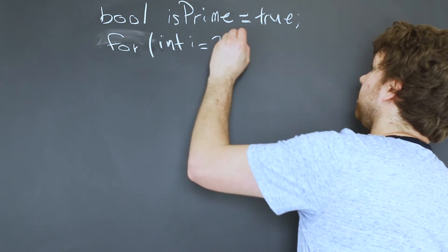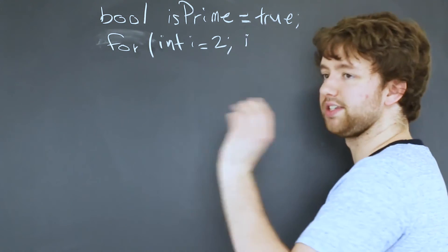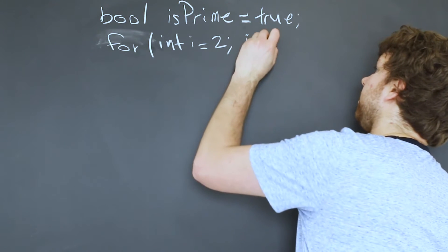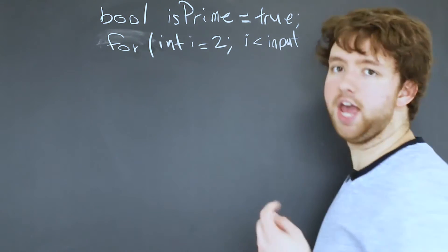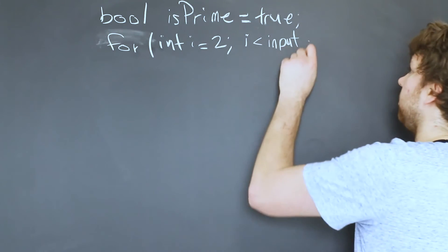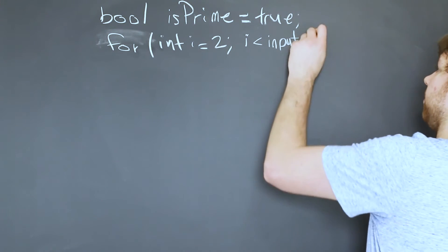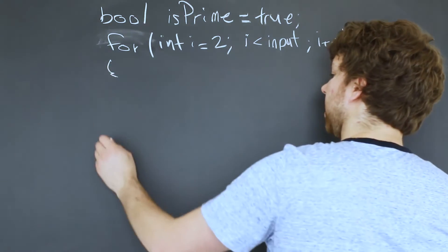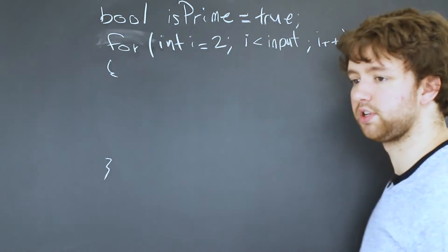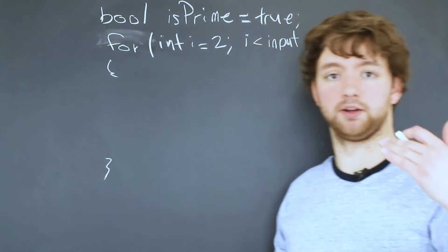And then we're going up as long as i is less than the number we're asking for. We'll just call that input. You can call it n, whatever you want. And each time we increment i. So this is how we test all the numbers between one and that number.